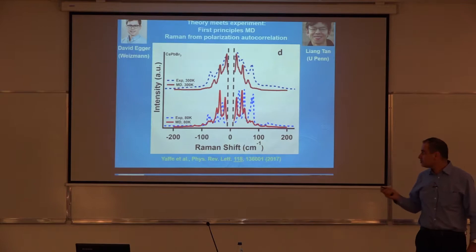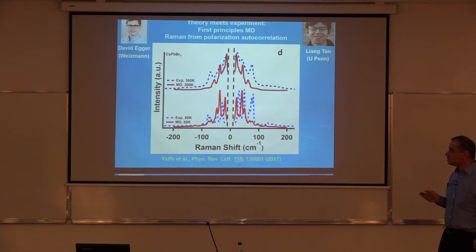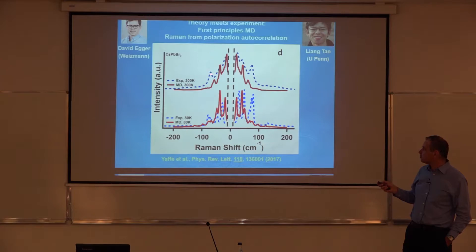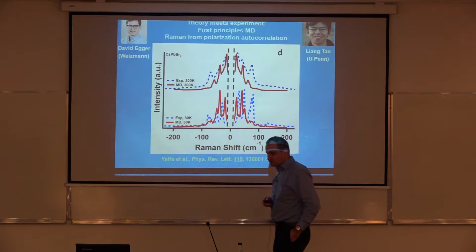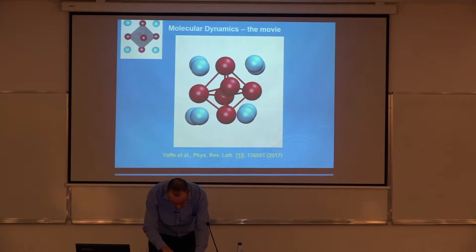What we did then is extensive molecular dynamics based on DFT, which David did. Then Liang Tan, who was a postdoc with Andrew, took these data and computed the Raman spectrum from the polarization autocorrelation function. This is theory and experiment at two temperatures. The agreement is not perfect but it's reasonable enough to start understanding the transfer at the higher temperature. Looking at the molecular dynamics, the top left shows the average structure from x-ray diffraction — what it looks like statically. But over time, it actually oscillates fairly wildly: the octahedra distort, the cesium atoms move back and forth — there's a lot of action.